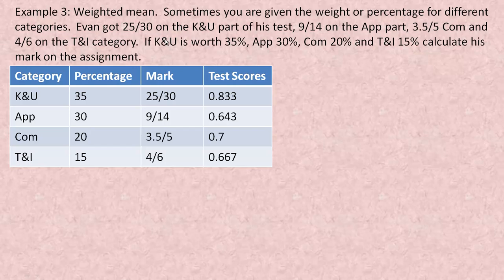Example number three: a weighted mean. Sometimes you're given the weight or percentage for certain categories. Let's say Evan on his test has four different parts: knowledge and understanding, application, communications, and thinking and inquiry. He got 25 out of 30 on knowledge, 9 out of 14 on application, 3.5 out of 5 on communication, and 4 out of 6 on thinking and inquiry. For Evan's course, knowledge and understanding is worth 35%, application 30%, communication 20%, and thinking and inquiry 15%.